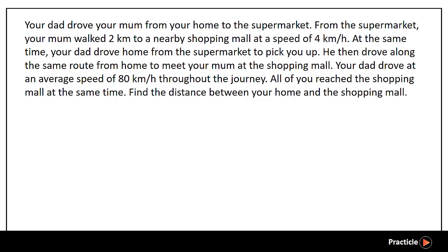Let's first see how many people are being mentioned in the question. We have your dad, your mom, as well as you — that makes three of you. Then next, where are the places being mentioned? We have your home, the supermarket, as well as the shopping mall — three places too. Looks like we have all the information that we need.